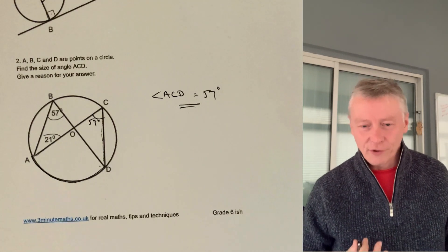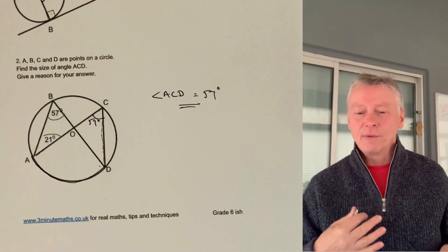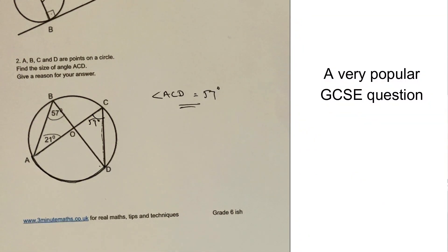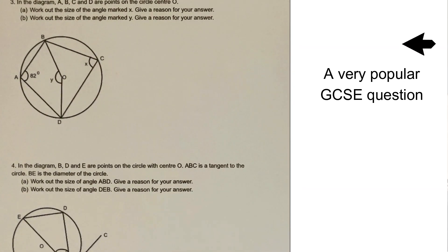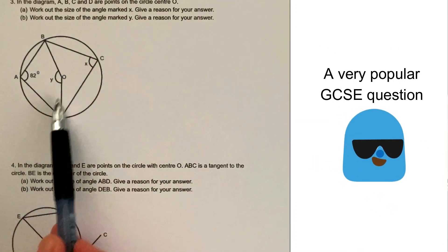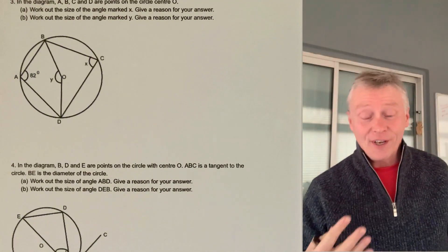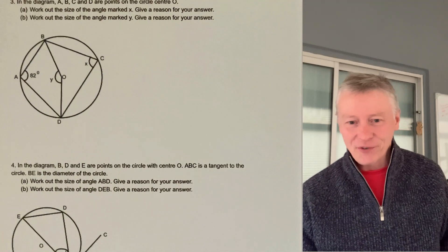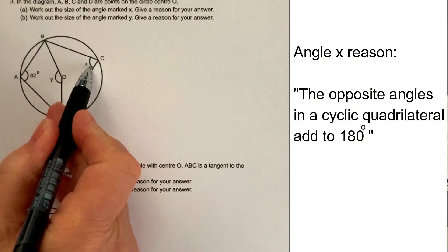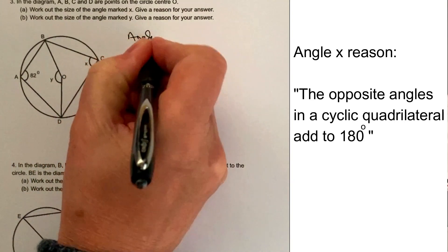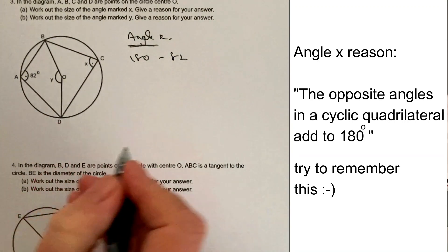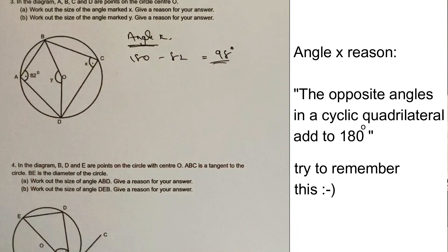You will get used to working with these circle theorems — once you know them, there are probably about four out of six that come up all the time. Question three deals with one of the most popular types: a cyclic quadrilateral, which is simply a four-sided shape inside a circle. The property is that opposite angles add up to 180 degrees. So if we want to work out angle X, it's going to be 180 degrees minus 82, because opposite angles add to 180.